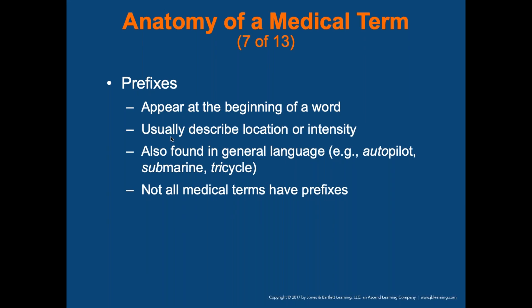Prefixes appear at the beginning of a word and usually describe a location or intensity. Not all medical terms have a prefix, but they're also found in general language — like 'autopilot,' 'submarine,' or 'tricycle' meaning three.